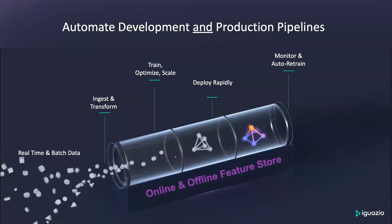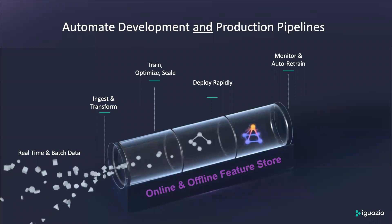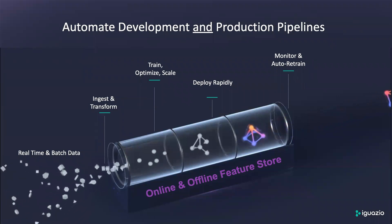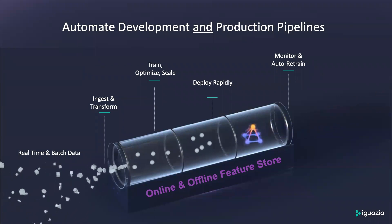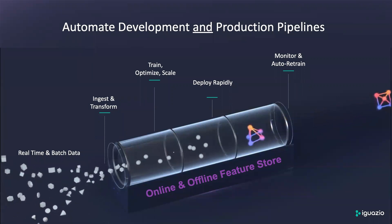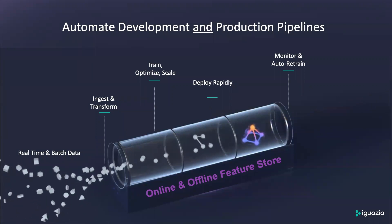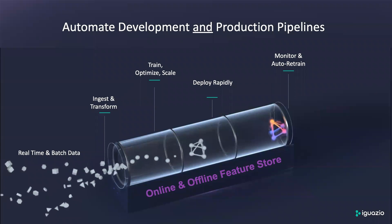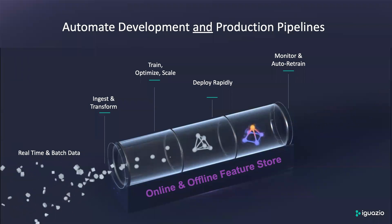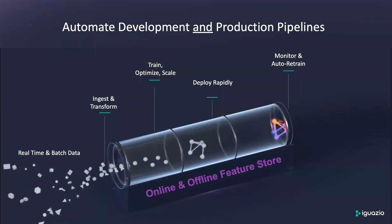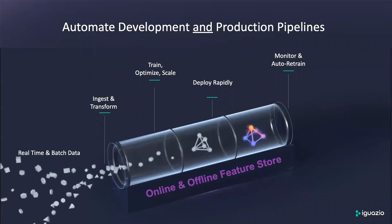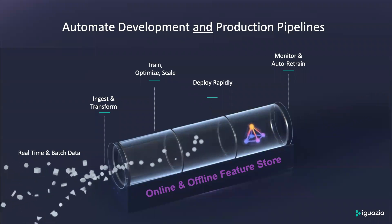This allows us to automate development and production pipelines, whether you're looking to ingest data in batch or real time, train your models at scale, deploy them to production, or monitor and retrain your models that you already have in production. All of this is using our online and offline feature store, which warrants an entirely separate conversation that we'd be more than happy to have with you.